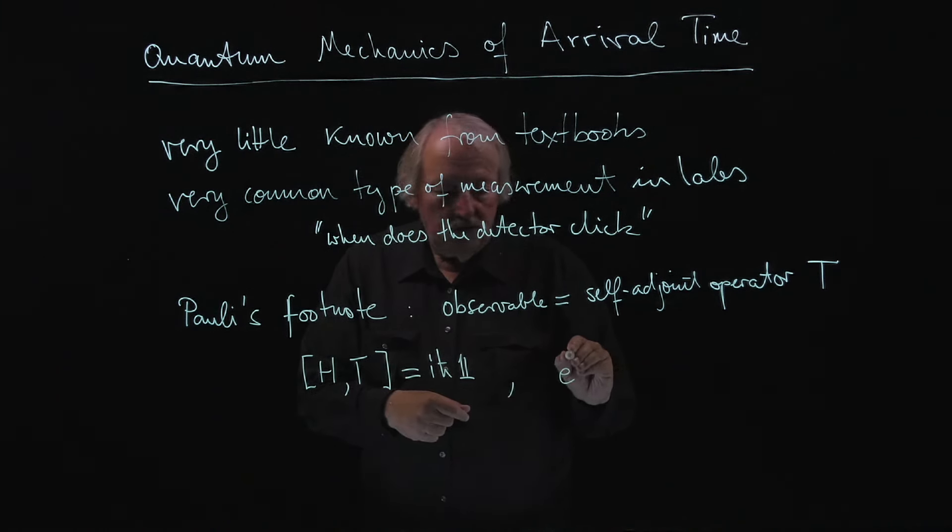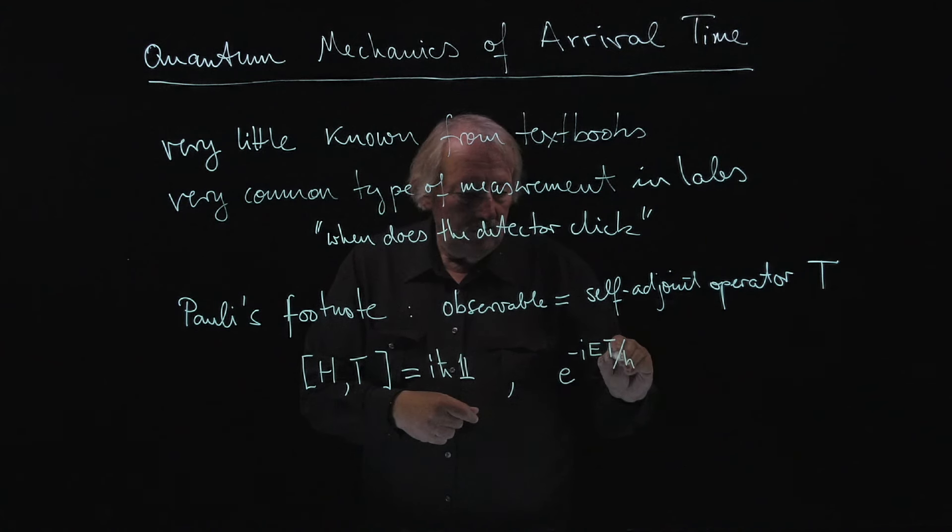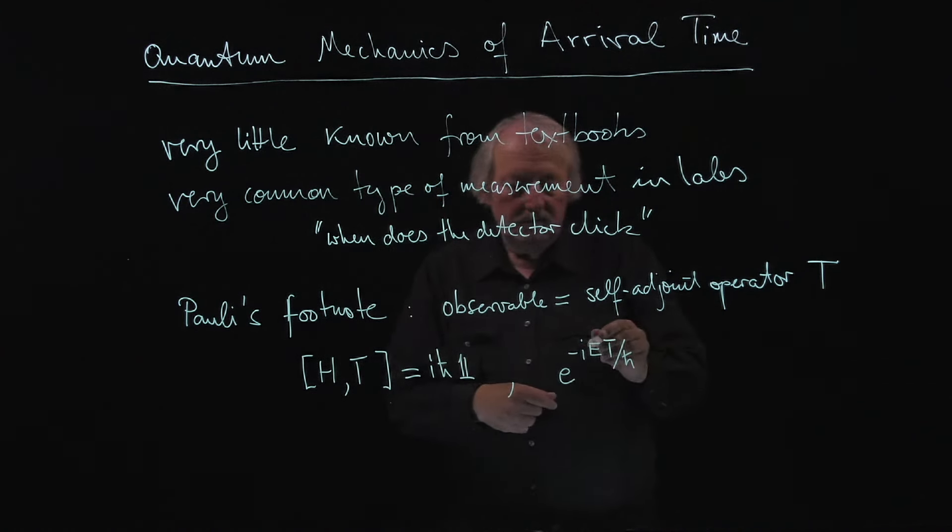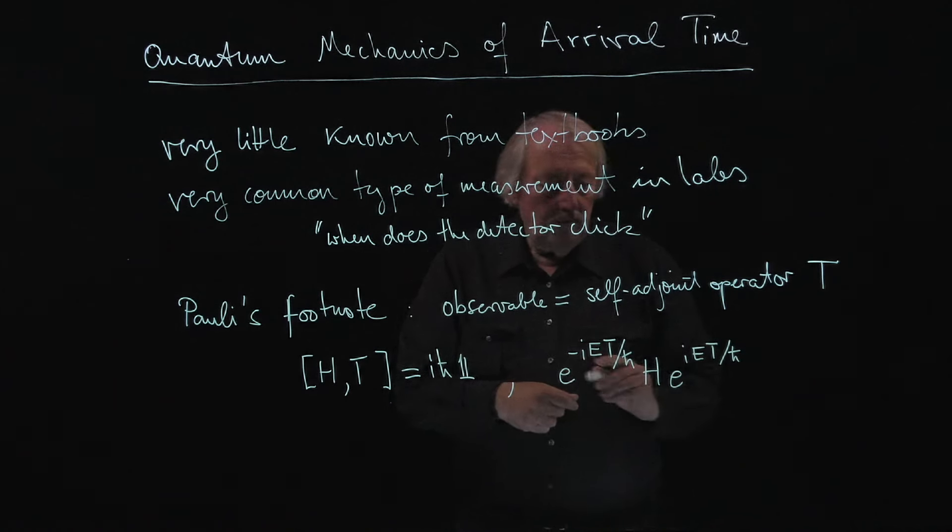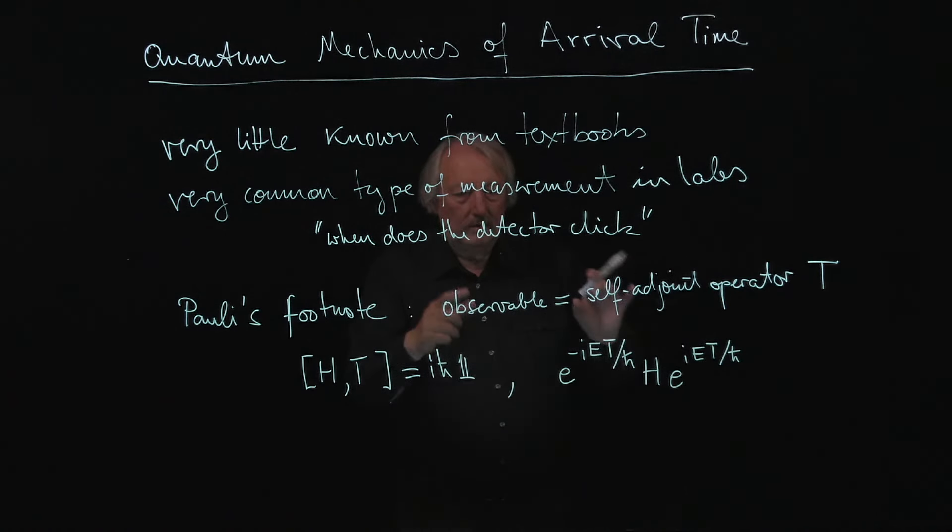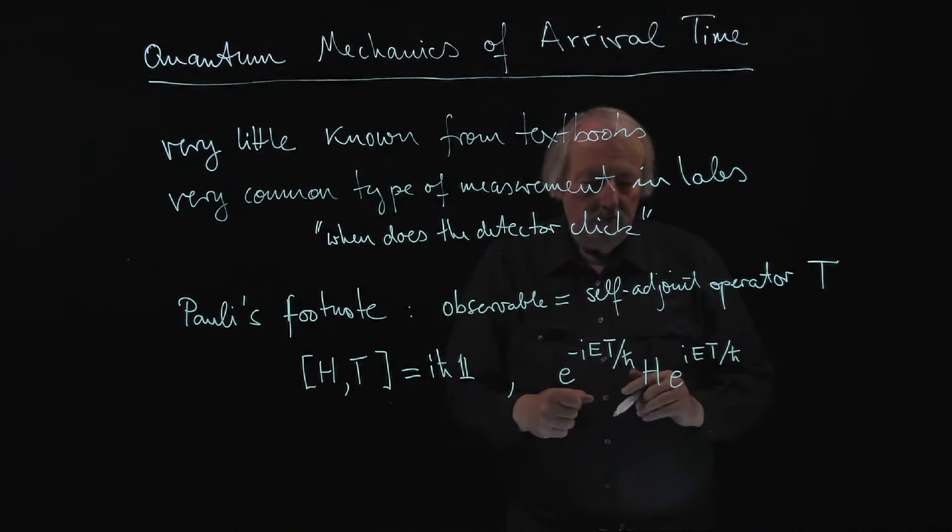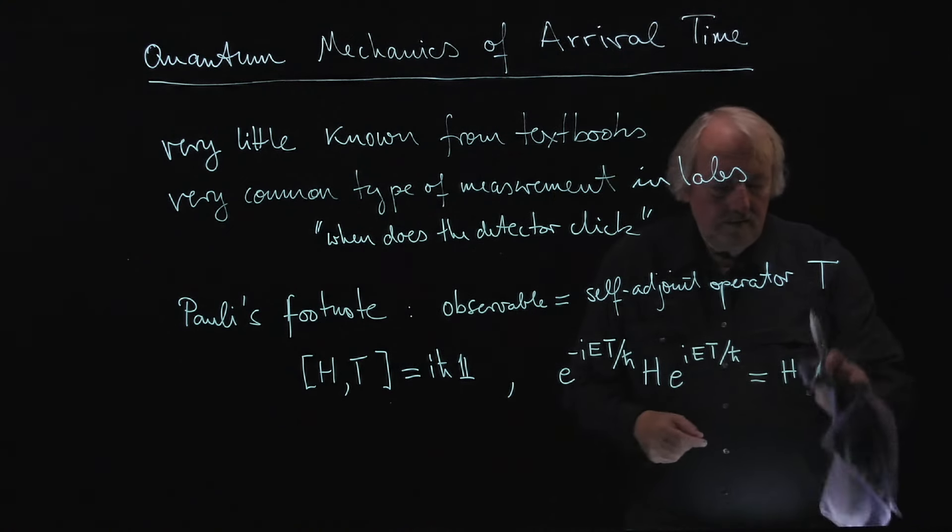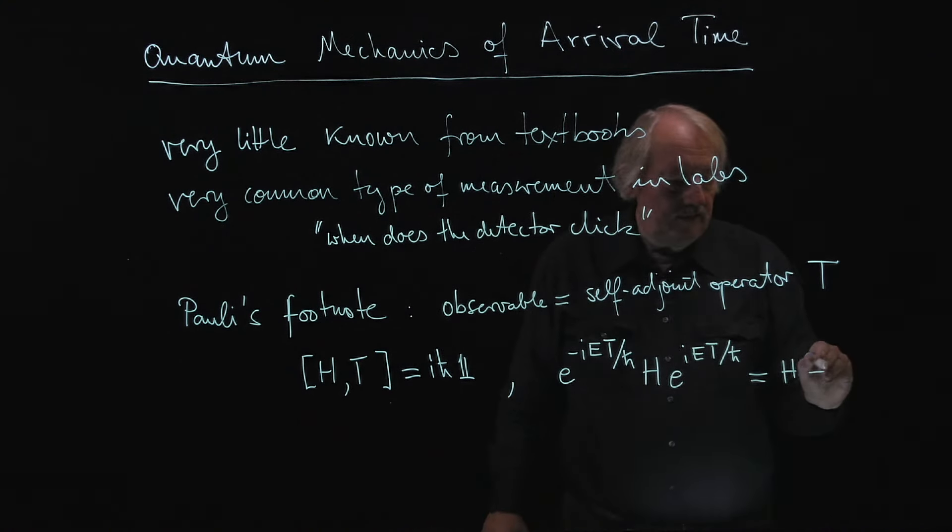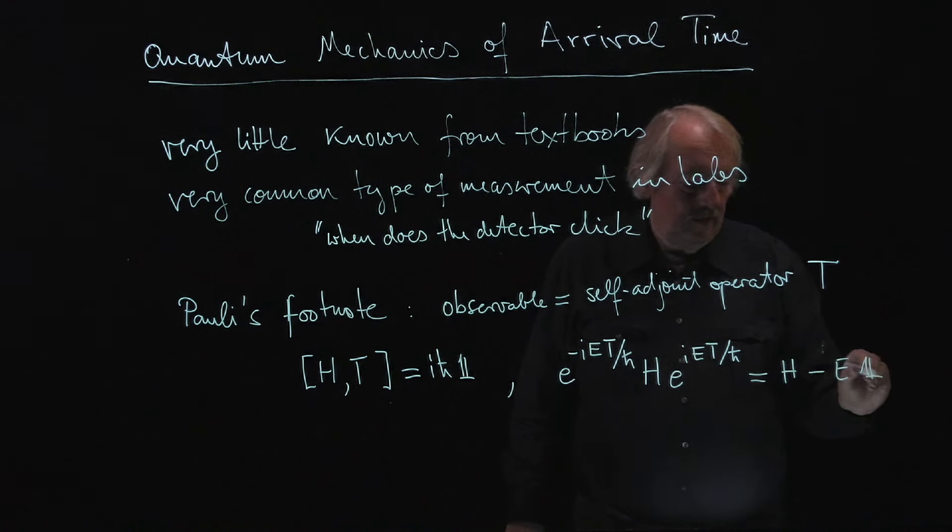We take the unitary group that is generated by this time operator. So this is a group of unitary operators with a parameter E, and we apply that to the Hamiltonian in much the same way as we usually apply the Hamiltonian to other observables. So then what we get is from this relation a differential equation showing that this is equal to H minus E.